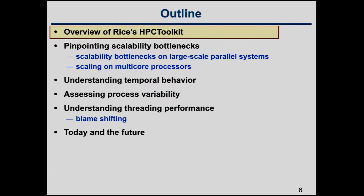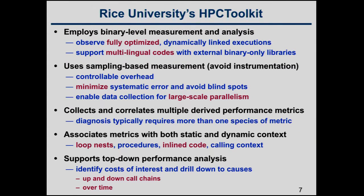Let me first tell you about Rice's HPC Toolkit, then I'll talk about using it to pinpoint scalability bottlenecks, how to understand how an application evolves over time, assessing the variability of processes, understanding the performance of threading, and then what some of the ongoing work is. HPC Toolkit employs binary-level measurement and analysis, so it allows you to observe fully optimized dynamically linked executions, as well as statically linked executions on the Cray systems and on the BlueGene systems.